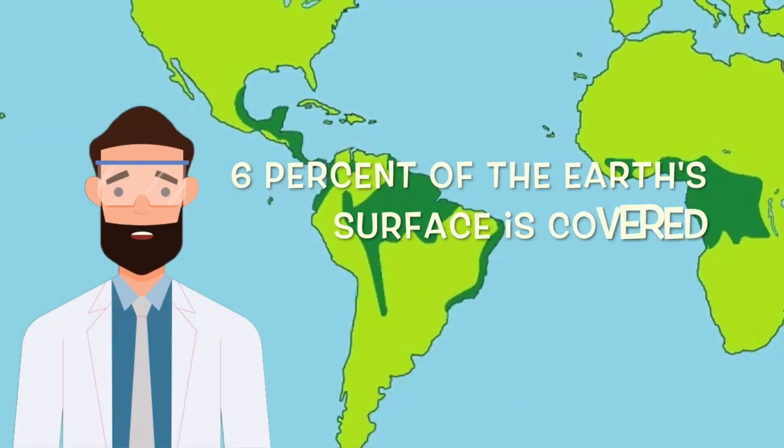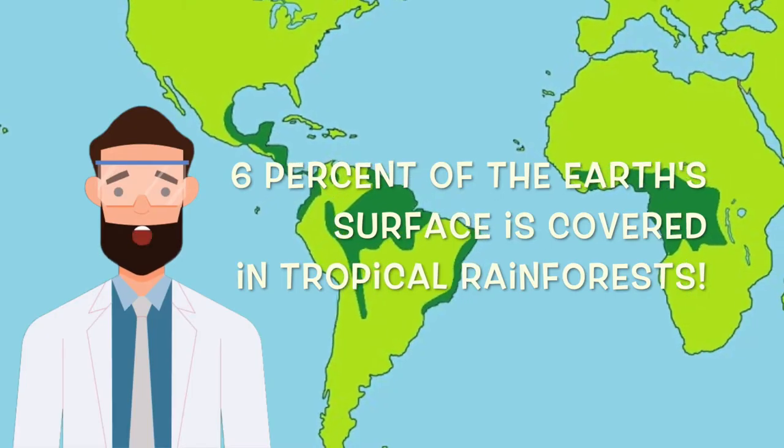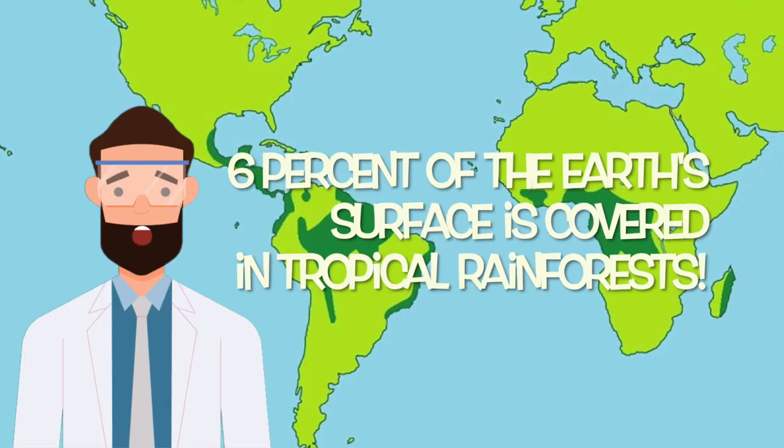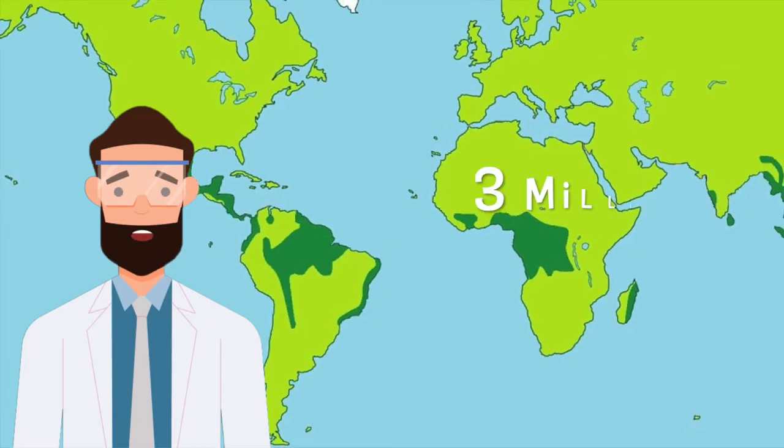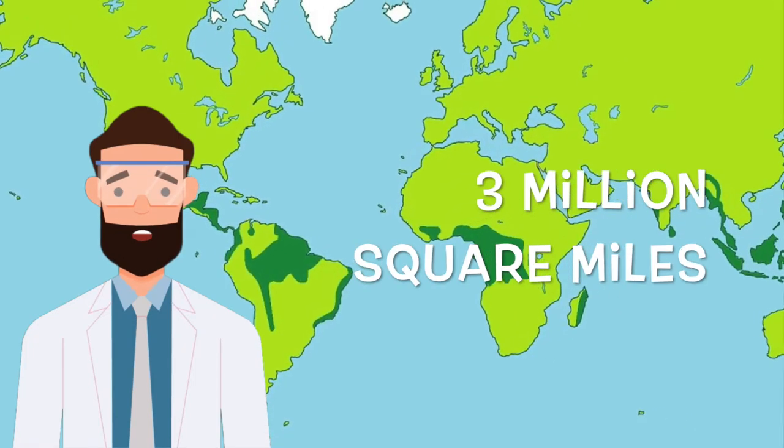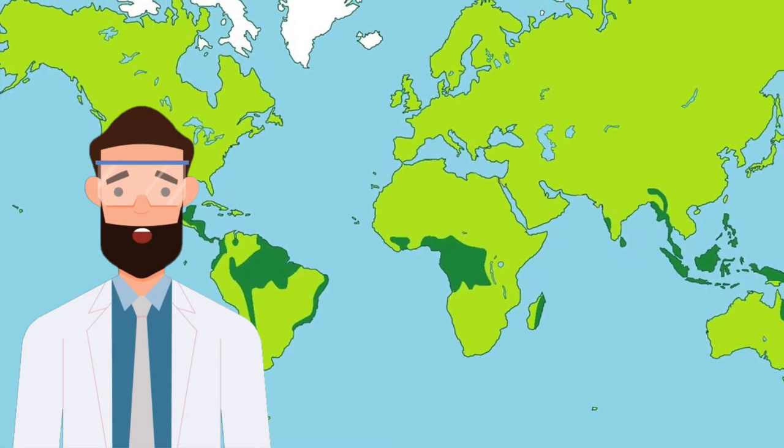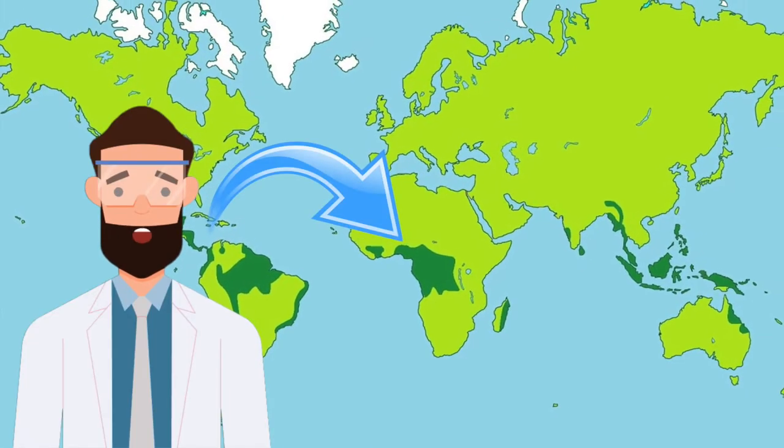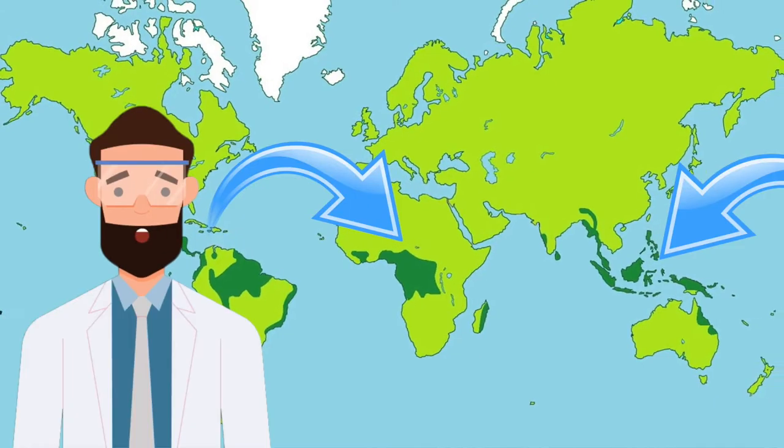Around 6% of the Earth's surface is covered in tropical rainforests and the Amazon Rainforest is the world's largest. It covers around 3 million square miles, which is larger than the next two forests, the Congo and the Indonesian forests, combined.